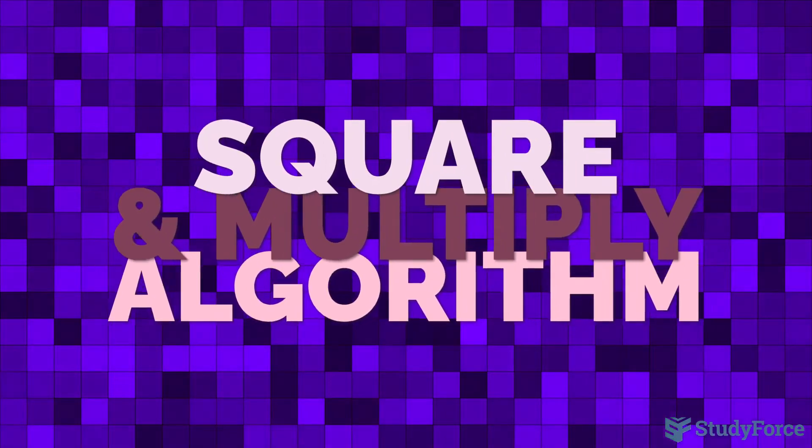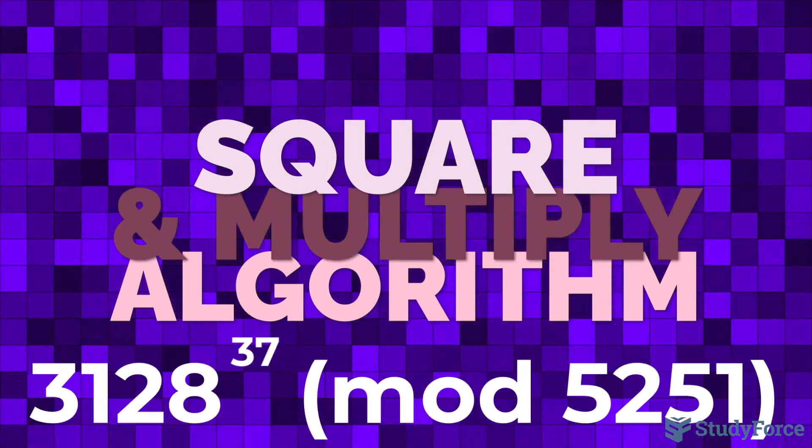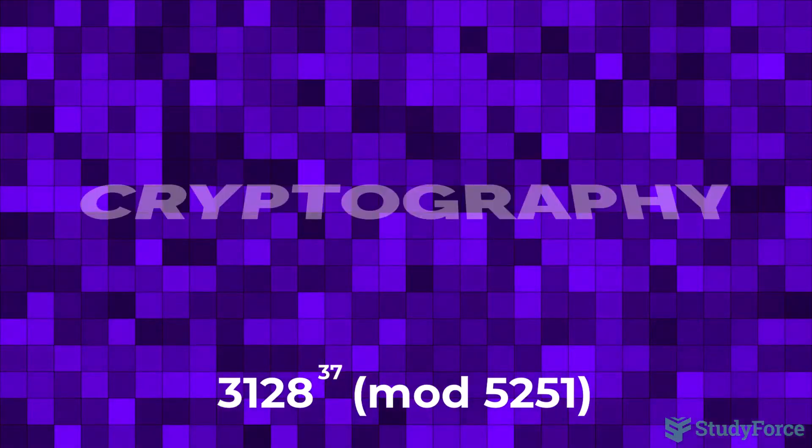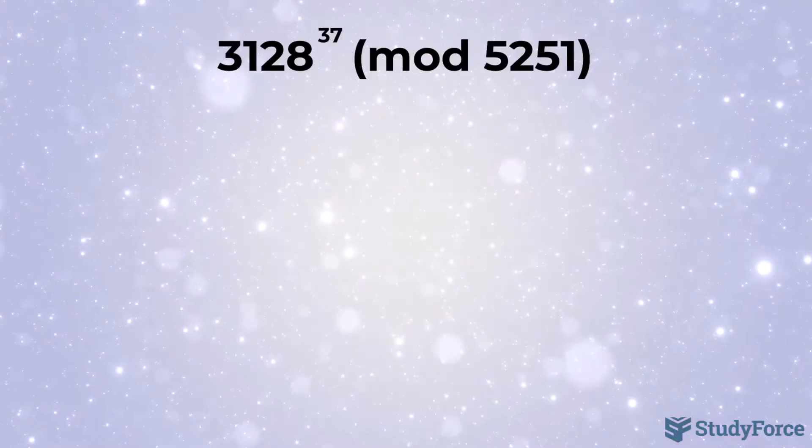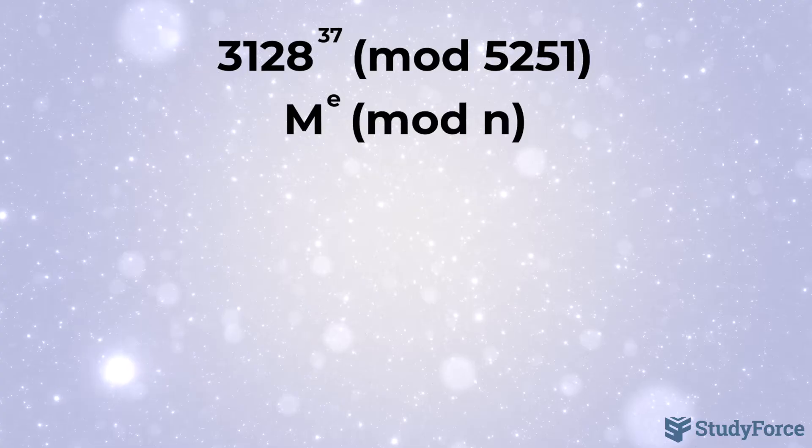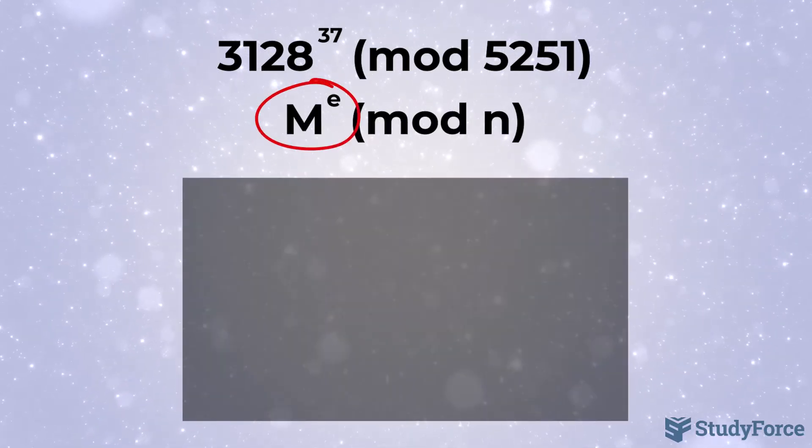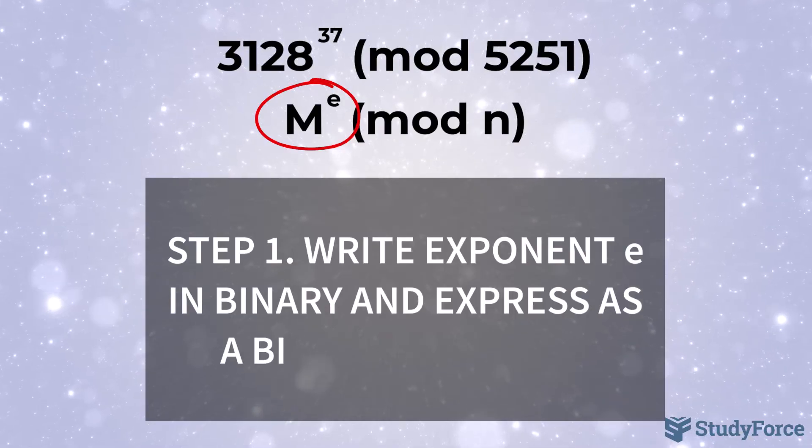The square and multiply algorithm is an efficient way to compute large powers in modular arithmetic, such as in this example. It is often used in cryptography and other applications requiring repeated exponentiation. Here's what the algorithm looks like. To compute m to the power of e mod n for large powers of e, write the exponent e in binary and express it as a binary expansion.